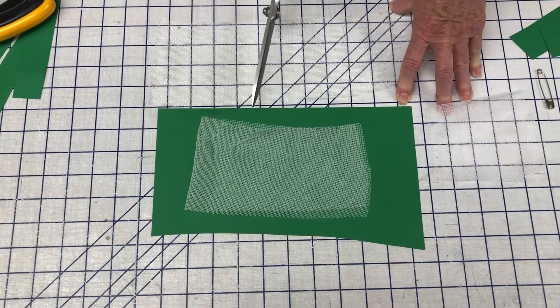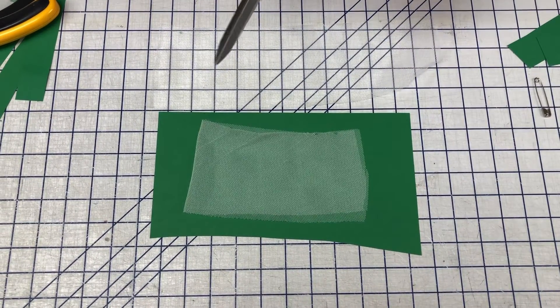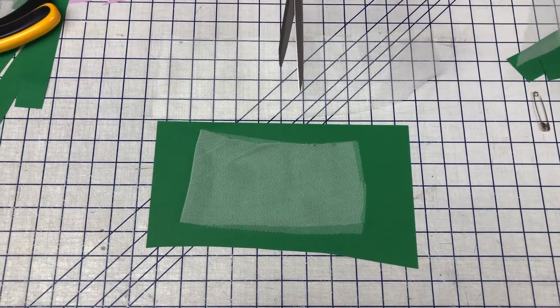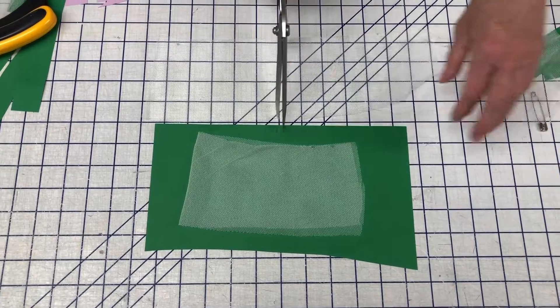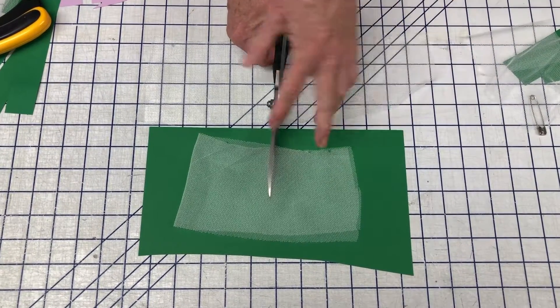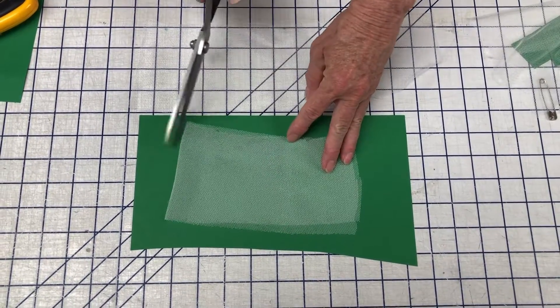I like to cut with a rotary cutter because I feel like I get a nicer, cleaner cut. For one reason, I'm not going up underneath. When I go up underneath, I'm lifting it, so I'm changing the shape of my fabric.